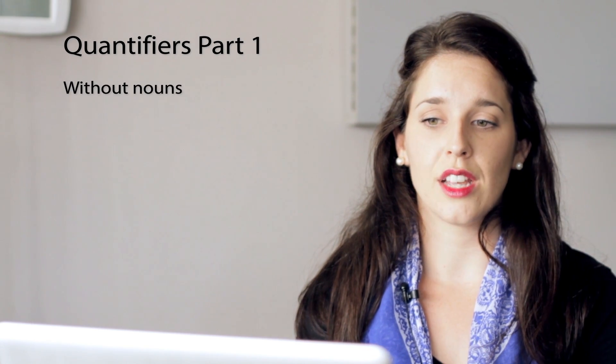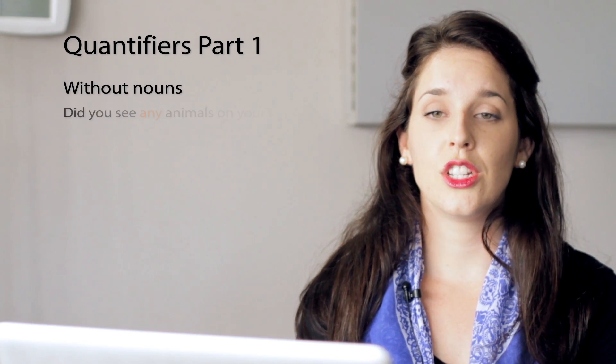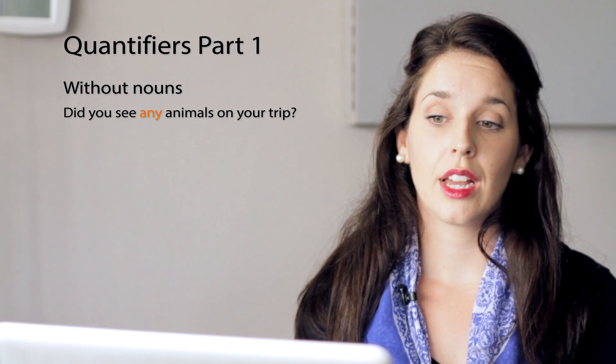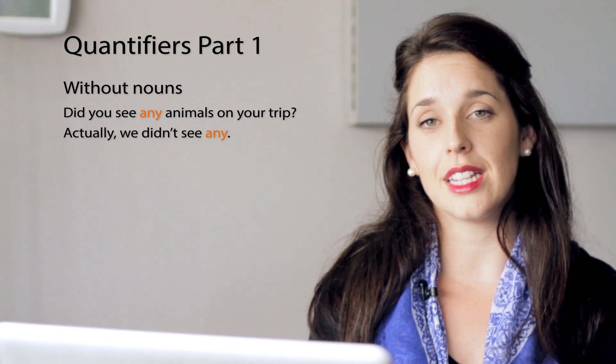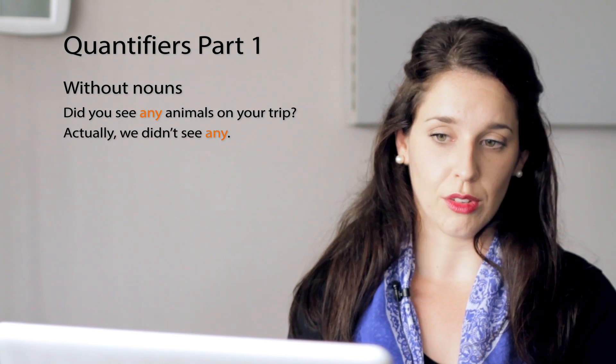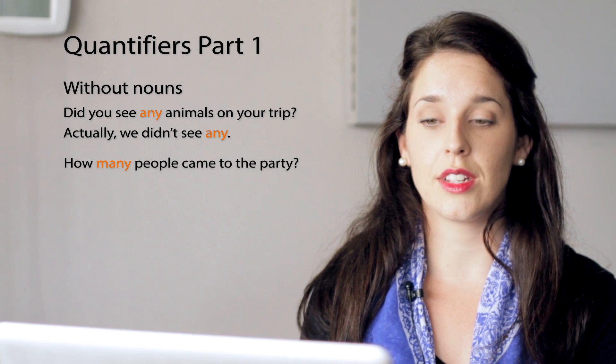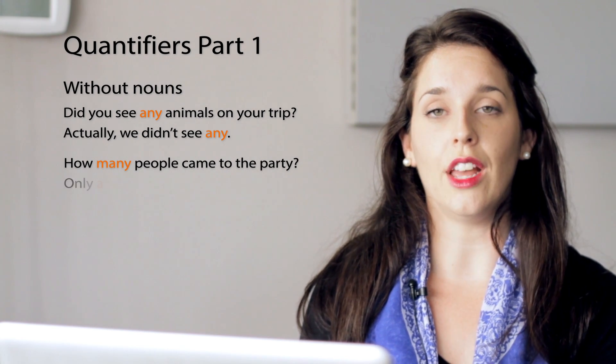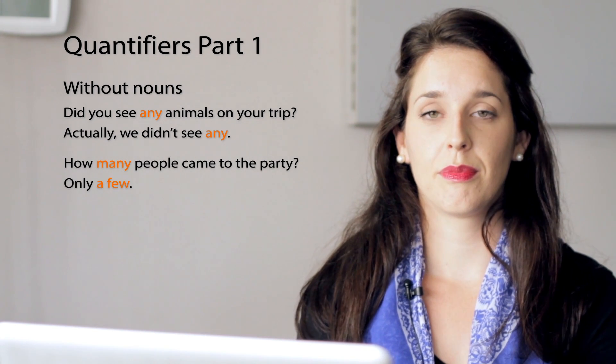Many of these quantifiers can be used without a noun. For example: 'Did you see any animals on your trip?' — 'Actually, we didn't see any.' Another example: 'How many people came to the party?' — 'Only a few.' This is the end of part one. We'll continue in part two.